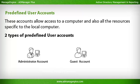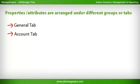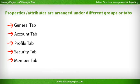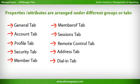The Guest Account is used to give unrestricted access to the local computer and is disabled by default. All the properties and attributes are arranged under different groups or tabs, including the General, Account, Profile, Security, Member, Member Of, Sessions, Remote Control, Address, and Dial-In tabs. With this brief introduction about User Accounts, the rest of the session will introduce you to all the attributes or properties of the User Object and their purpose.